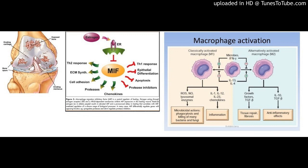Macrophage Migration Inhibitory Factor (MIF) Inhibitor Z590 Suppresses Cartilage Destruction in Adjuvant-Induced Arthritis Via Inhibition of Macrophage Inflammatory Activation. Immunopharmacology and Immunotoxicology, 2018 February 15.